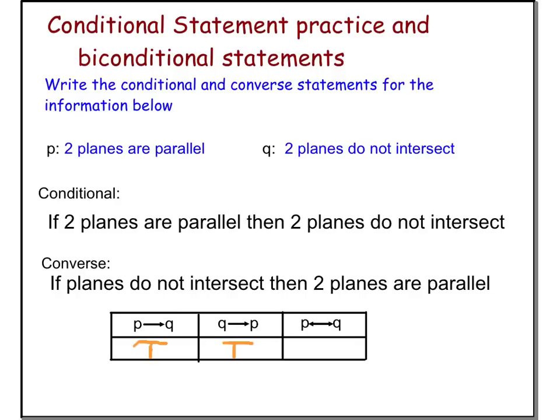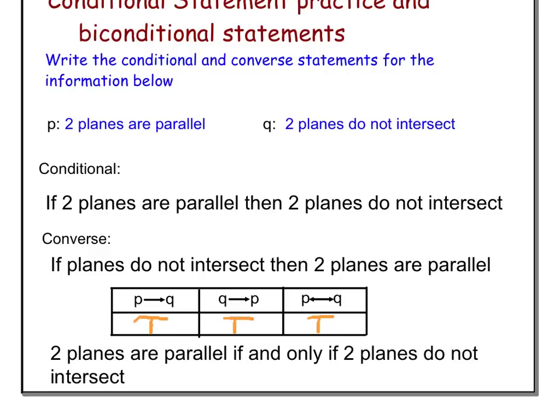If both the conditional and the converse are true, if both parts of this table are true, then we can write a biconditional, and it also will be true. So here comes the biconditional. The final statement is the biconditional. Notice that it doesn't start with IF. It doesn't have a THEN in it. It has an IF and ONLY IF in the middle, meaning that the truth value goes both ways, just as you will notice that the symbol for IF and ONLY IF is a double arrow. It goes both ways. Two planes are parallel if and ONLY IF two planes do not intersect.